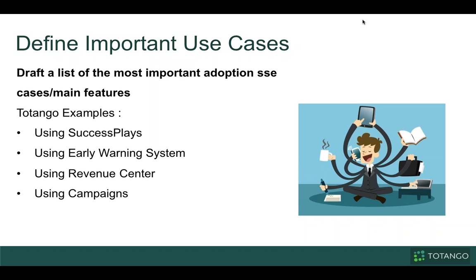I need to know: is my customer using success plays — they purchased this additional functionality, are they leveraging it? The main use case for Tatango is that early warning system — are they using it? Did they purchase revenue center — are they leveraging that? And are they leveraging campaigns? Write down your main use cases and then define what good product adoption looks like for each one. For success plays, it could be the number of success plays they have running, or the number of tasks the team is closing. For campaigns, do they have campaigns running and how many?